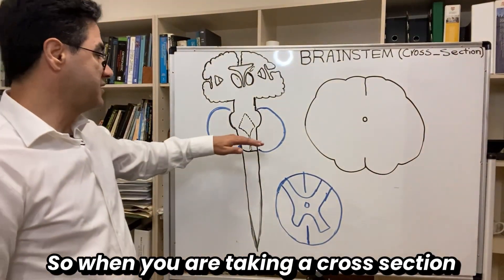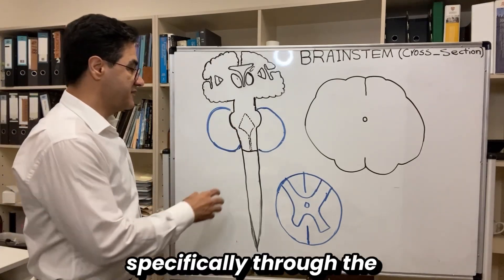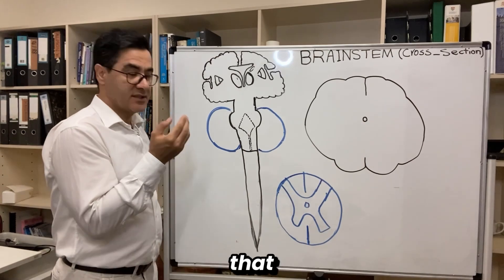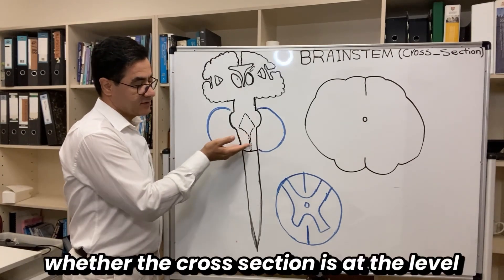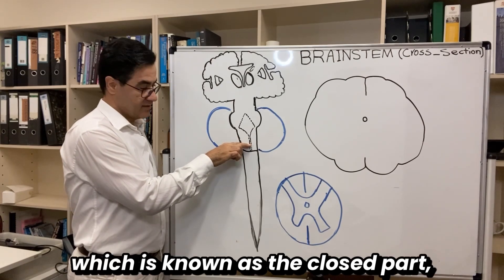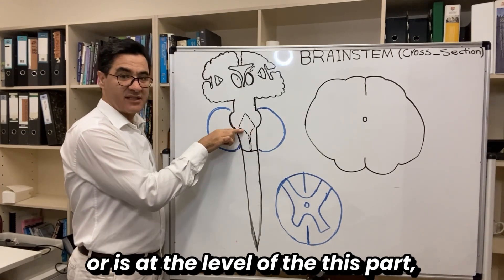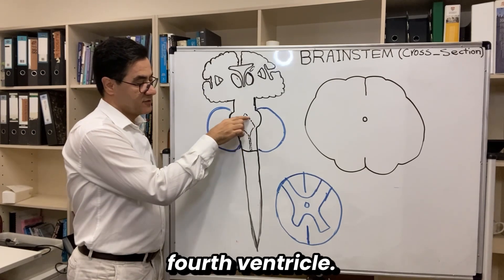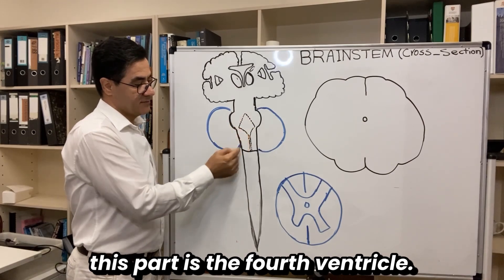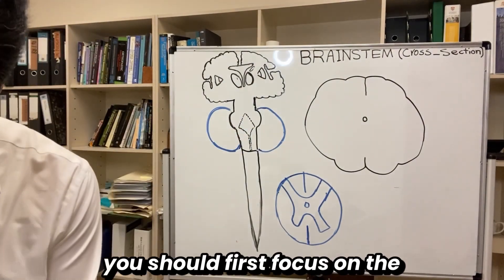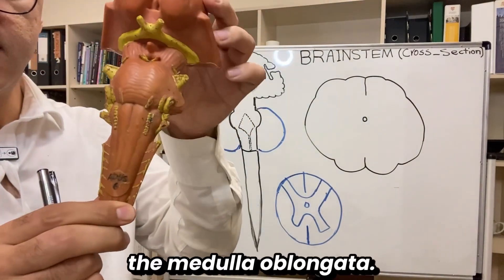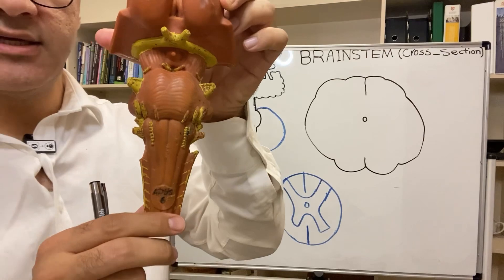When taking a cross-section through the medulla oblongata, you should first know whether the cross-section is at the level of the central canal — known as the closed part — or at the level of the fourth ventricle — the open part. If you want to know the details, you should first focus on the external features of the medulla oblongata.